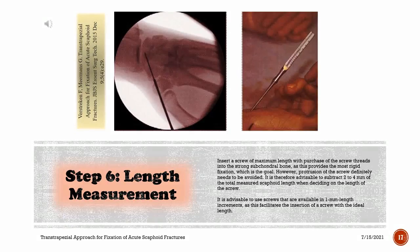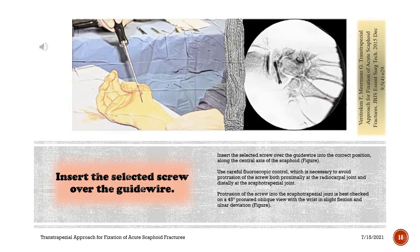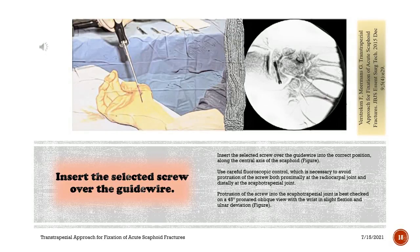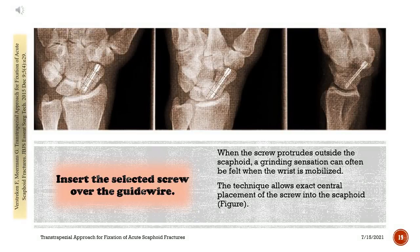However, protrusion of the screw must be avoided. It is advisable to subtract 2–4 mm from the total measured scaphoid length when deciding on screw length. Use screws available in 1 mm length increments to facilitate selection of the ideal length. Insert the selected screw over the guide wire into the correct position along the central axis of the scaphoid. Use careful fluoroscopic control to avoid protrusion both proximally at the radiocarpal joint and distally at the scaphotrapezial joint. Protrusion at the scaphotrapezial joint is best checked on a 45-degree pronated oblique view with the wrist in slight flexion and ulnar deviation. When the screw protrudes outside the scaphoid, a grinding sensation can often be felt when the wrist is mobilized.